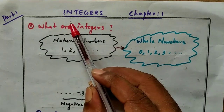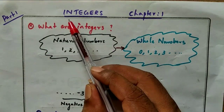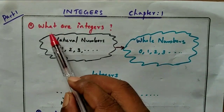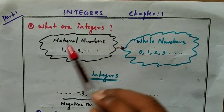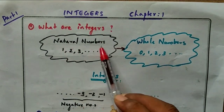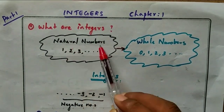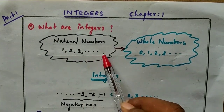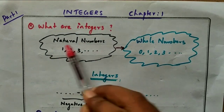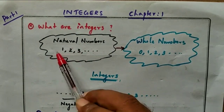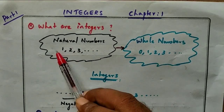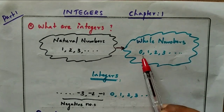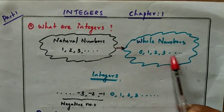Dear students, welcome to my video. This is the new chapter: Integers, chapter number 1. Before that, we need to know natural numbers. Natural numbers are 1, 2, 3, etc. — the counting numbers. Including 0 with natural numbers gives us whole numbers: 0, 1, 2, 3, etc.